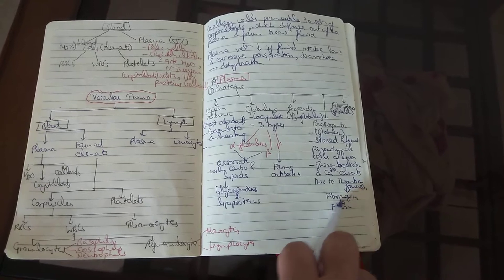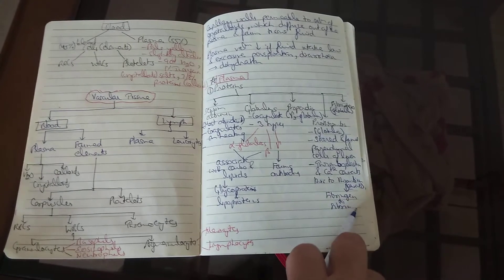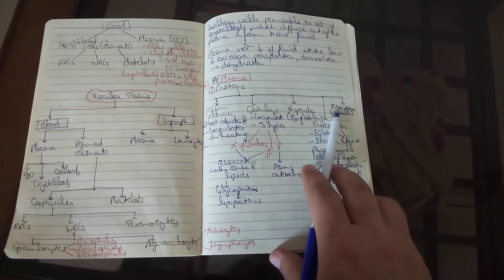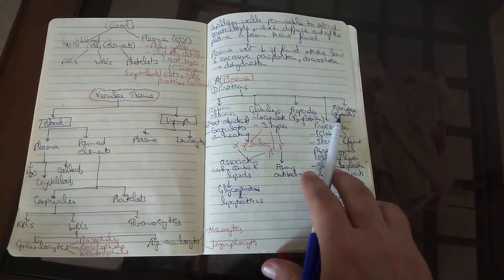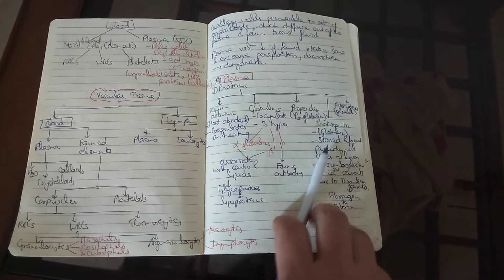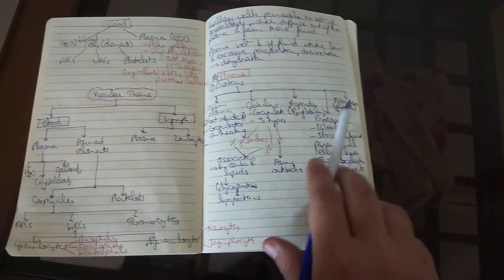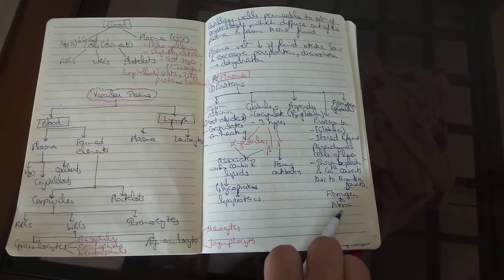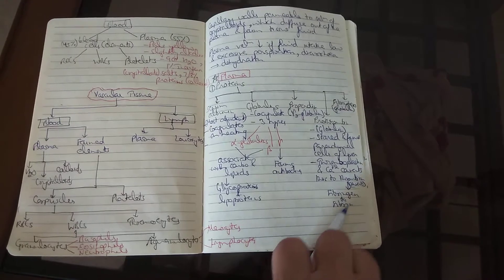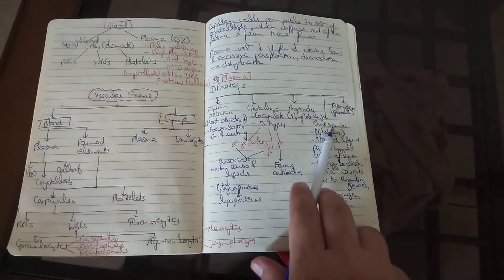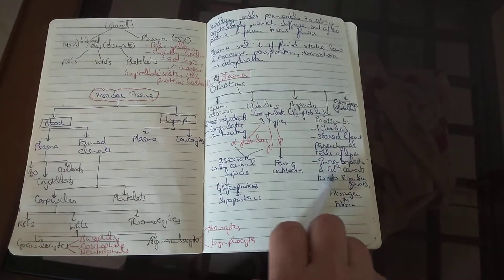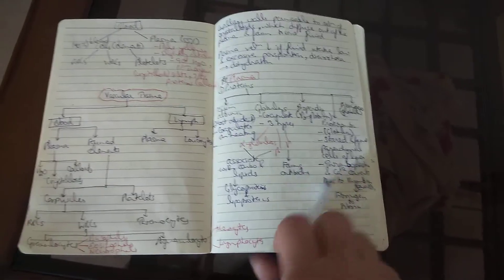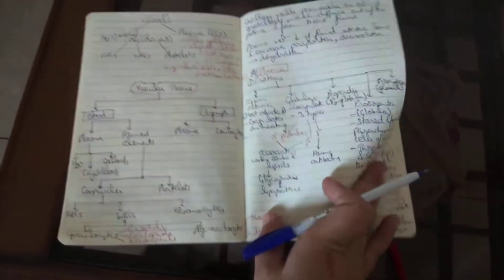Thromboplastin and calcium convert prothrombin to thrombin, which then converts fibrinogen to fibrin, helping in blood clotting. Fibrinogen is also a globulin and is converted into fibrin by thrombin, which itself is converted from prothrombin with the help of prothromboplastin and calcium ions.